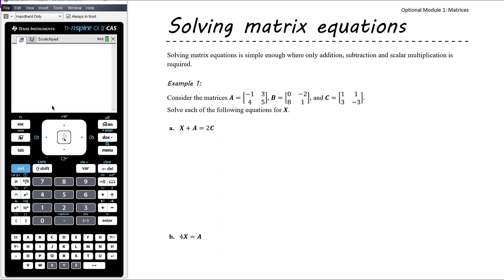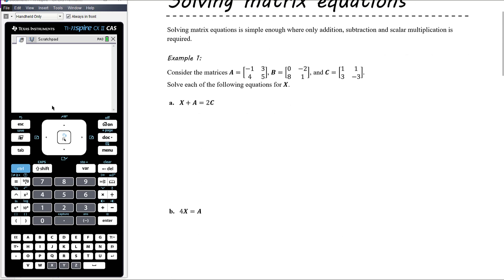Here we have three matrices A, B, and C — all two-by-two matrices listed in the stem of the question. For each of the three equations shown here, we want to solve for X, which means getting X on its own. Thinking back to your year seven, eight, and nine algebra, it simply means doing the same thing to both sides of the equation until you get X on its own.